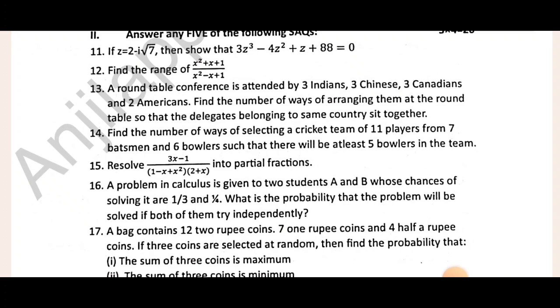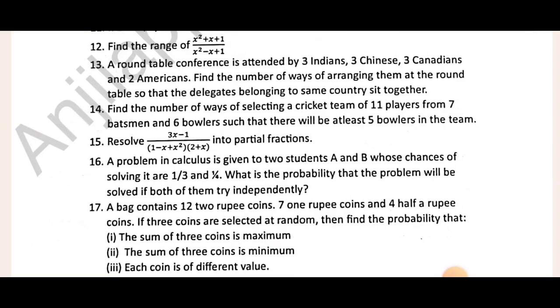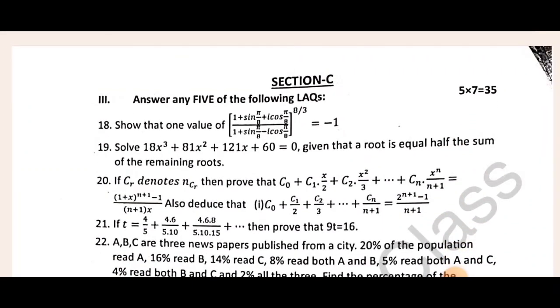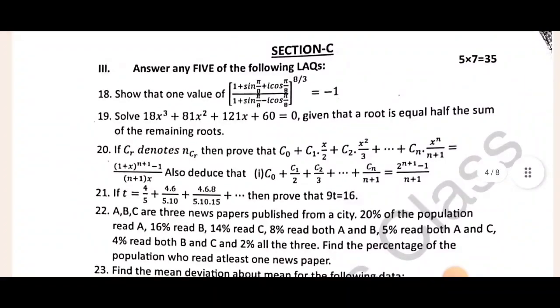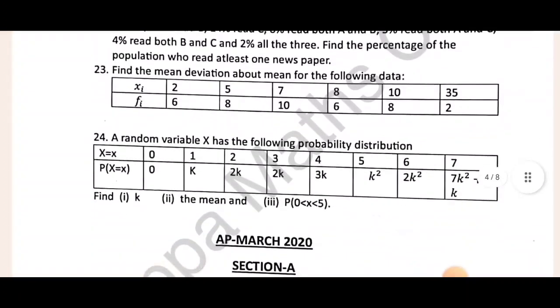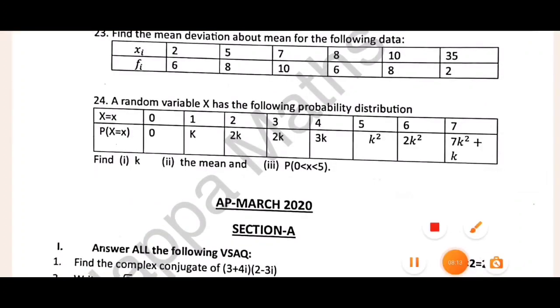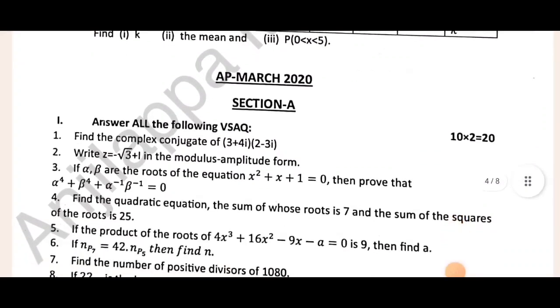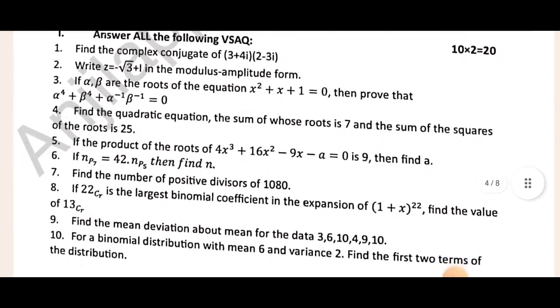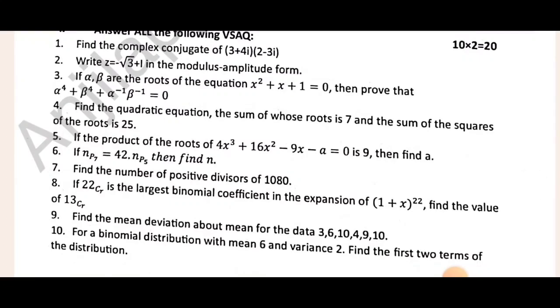Standard form first question and modulus amplitude form - most important modulus amplitude form. Next Section B, find the range twelfth problem. Fourteenth question cricket team most important - just combinations. Start now, definitely 60 plus marks.